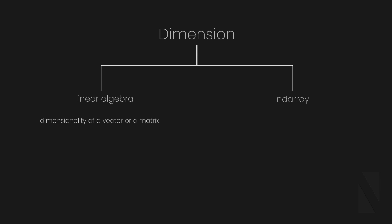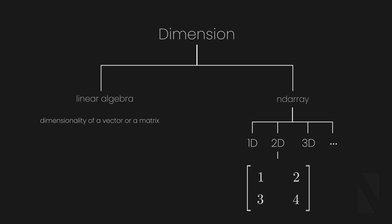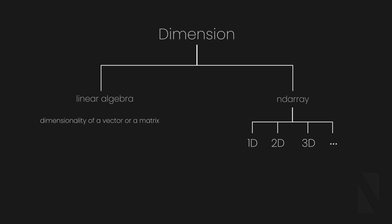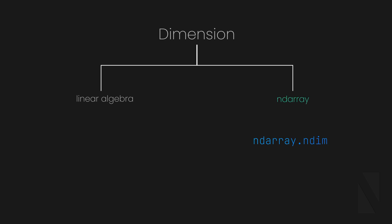In NumPy, an array is also referred to as ndarray, shorthand for N-dimensional array. This means an array with any number of dimensions — like a 1D array, a 2D array, and so on. But in NumPy, when we use the term 2D array, it doesn't carry the same meaning as a 2D vector. Instead, it defines the number of axes in an array. For example, a 1D array is a vector, a 2D array is a matrix, and a 3D NumPy array is a tensor, which is extremely useful in deep learning. You can get the dimensionality of an array using ndim, which returns the number of axes.